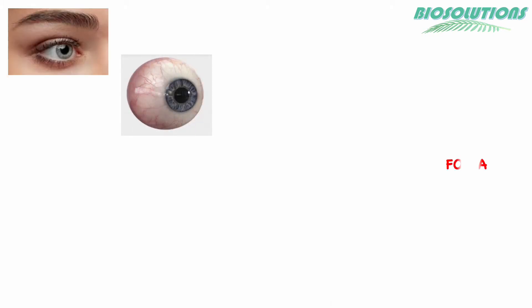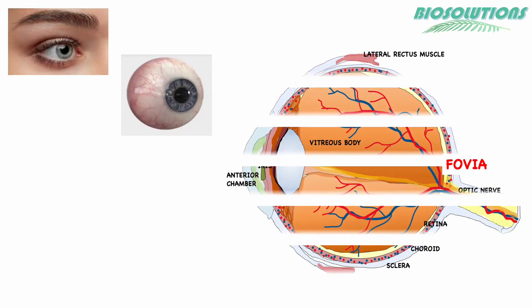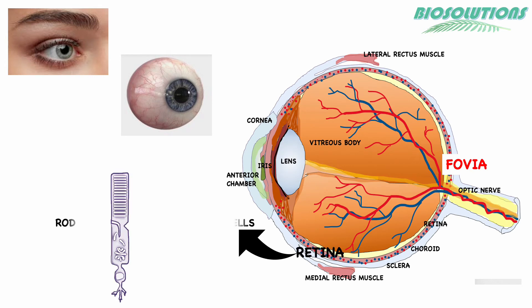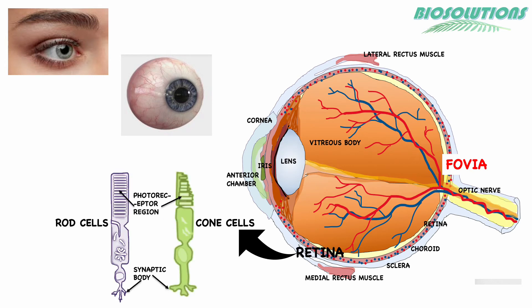These are rod cells and cone cells. Rod cells are very sensitive to light and are responsible for night vision. Cone cells are sensitive to different wavelengths of light, helping with daytime vision and color perception.